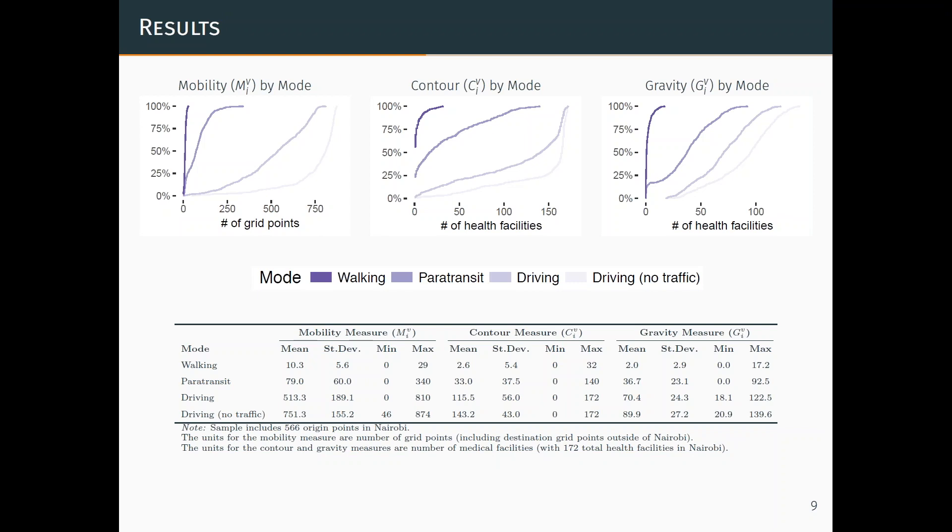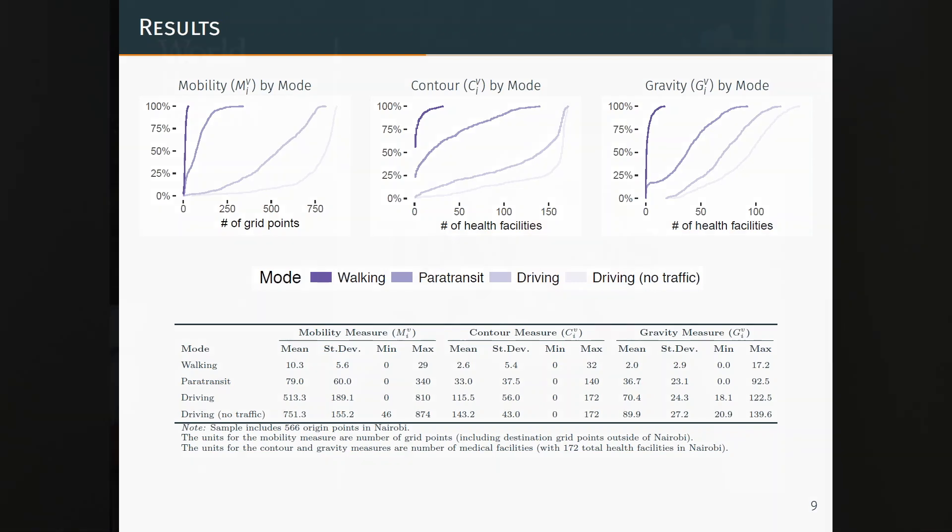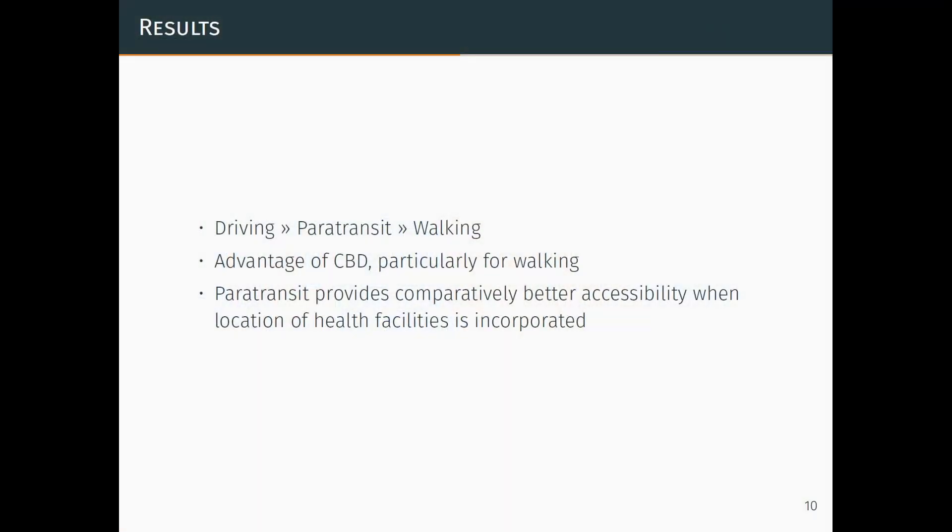The paratransit line looks closer to driving than to walking. If you want to use these measures for policy, the way you measure it, you're going to come out to different policy decisions. Making sure that we think deeply about how we're measuring what we're presenting in data across different modes can have a lot of difference in which modes you value and how good of a job you would say they're doing providing access.